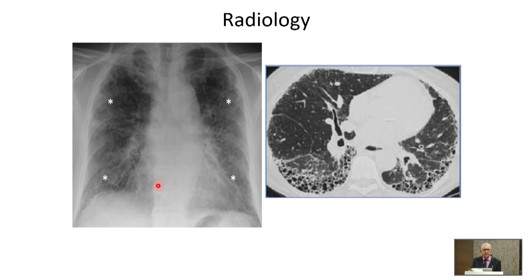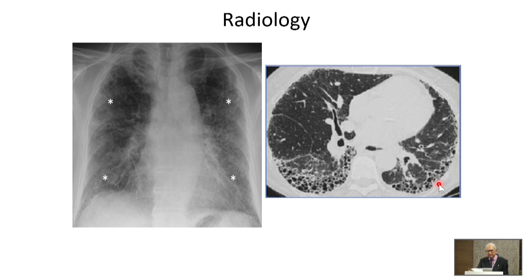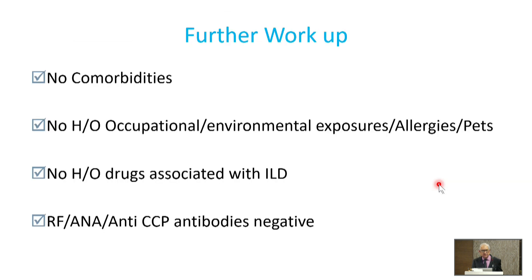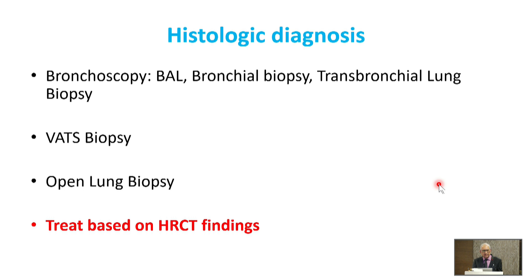What we actually did was a CT scan, and in the same patient it showed classical honeycombing — ILD was confirmed. Any postgraduate would diagnose this as an advanced case of ILD, probably idiopathic pulmonary fibrosis. He also had hyperinflation. There were no comorbidities, no history of occupational or environmental exposure, no drug association with ILD, and initial rheumatological workup was negative.